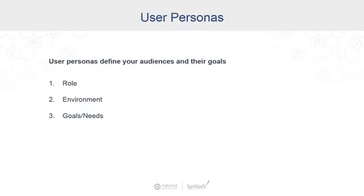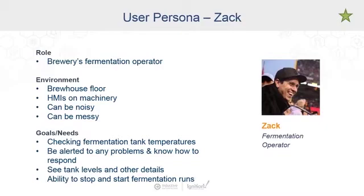To help us keep track of what we're building and who we're building for, we like to use personas. Personas are an archetypical representation of a user type. As we gather input from future users of our system, we include information about each person's role, their work environment, and their goals or needs to flesh out the persona. For example, after interviewing a couple of fermentation operators, we've built a persona for Zach. It's important to note that while Zach may not be an actual person, he represents a real general audience for our project. Later, when we're building our screens, we'll be able to look back at a persona and ask: will it work for Zach?